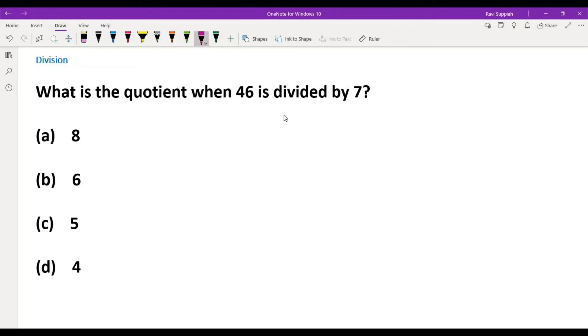So we have 46 divided by 7. What is the first step? The first step is to look at the leftmost digit of the number we are trying to divide, so this is 4, and look at the number that we are dividing by, which is 7.